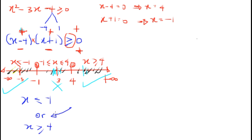I used 'or' here because the inequality regions do not overlap — they are on separate parts of the number line. On the number line, the circle at minus 1 is shaded because it includes equal to, and the arrow extends left. At 4, the circle is also shaded and the arrow extends right.